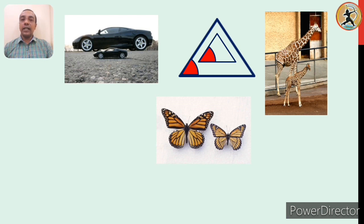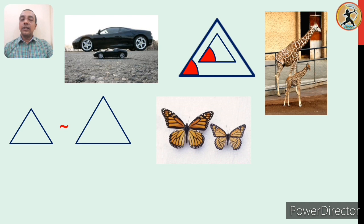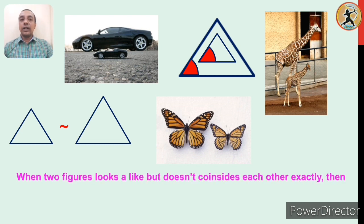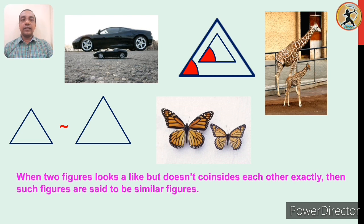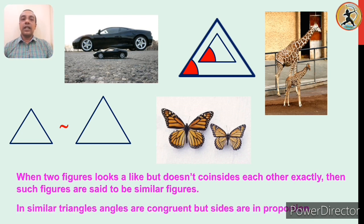How can we indicate the similarity between two triangles? If these two triangles are similar, we can say that the first triangle is similar to the second one using the similarity sign shown in red on the screen. To summarize: in congruency, the angles and sides are all congruent to the corresponding angles and sides of the second triangle. But in similarity, only the angles are congruent and the sides are in proportion.